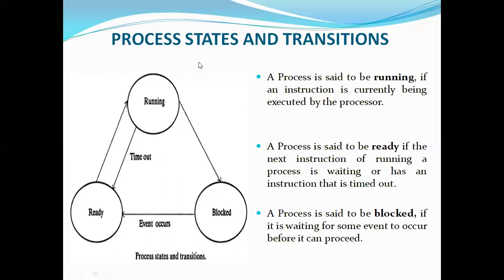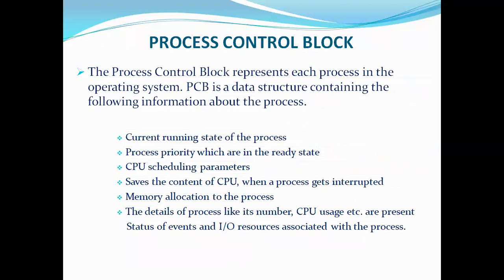This is basically the state transition of the process — here a process means a call processing in our perspective. Process control block (PCB) is basically the status of the process. For example, in an exchange having 100 calls currently — 100 processes — say 20 calls in running state, 20 in ready state, and others in blocked state. The status of all the processes is basically called the process control block, or PCB.